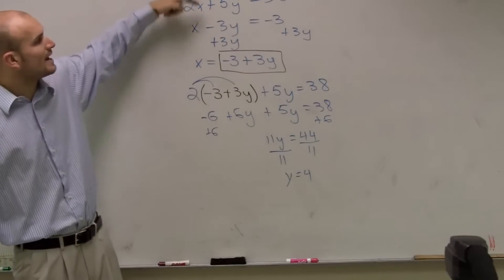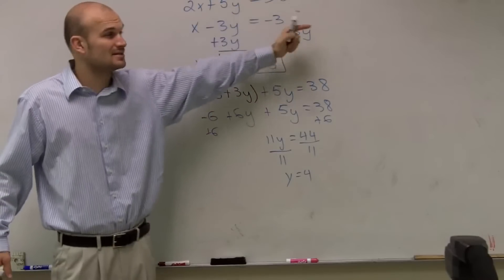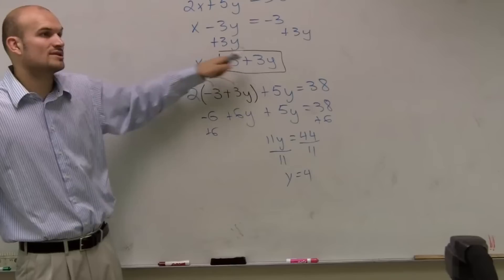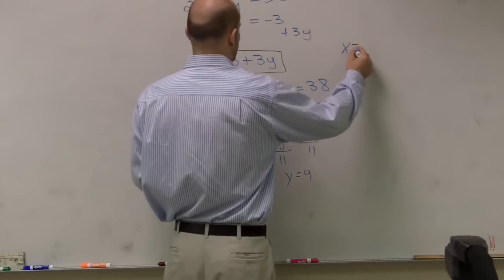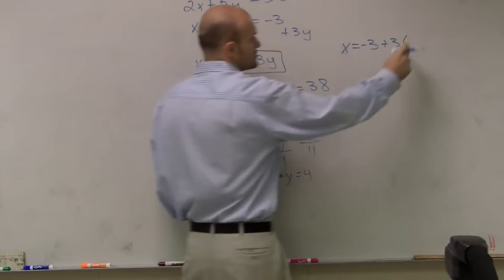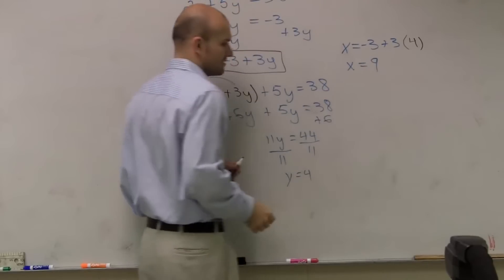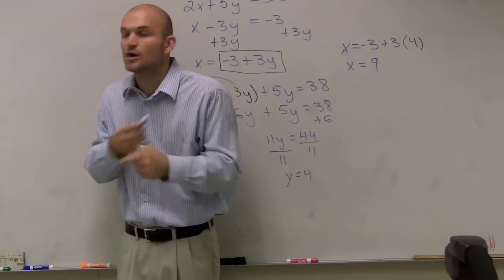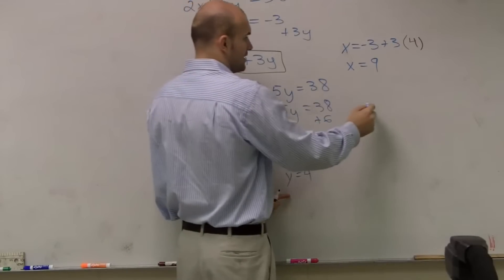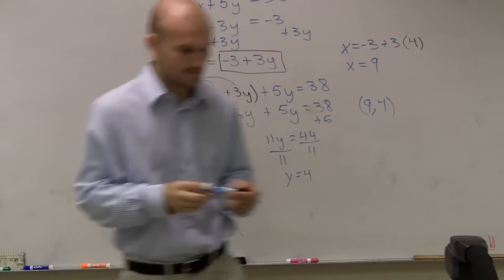You can plug your y into either one of these equations, but the best thing to do is to take that value of y and plug it back into the equation when it's already solved for x. So now I can say x equals negative 3 plus 3 times 4, which gives x equals 9. Substitution tells us where our two systems intersect — the point they share. Since they share exactly one point, I can write it as the coordinate point (9, 4).